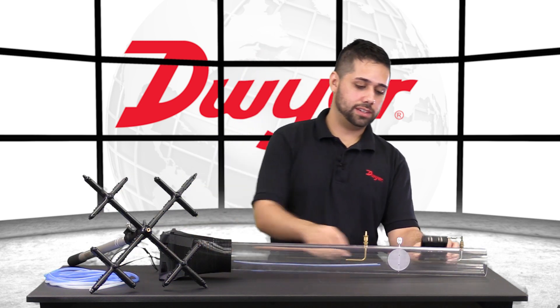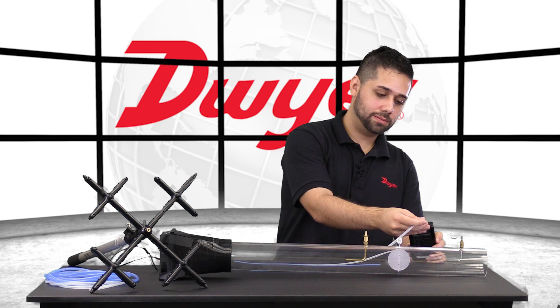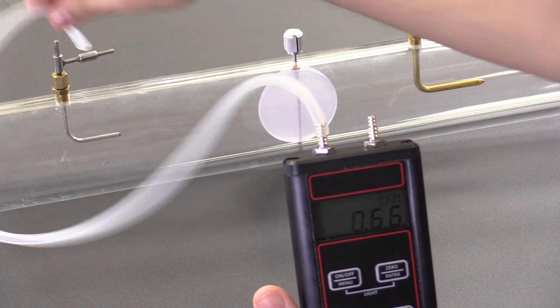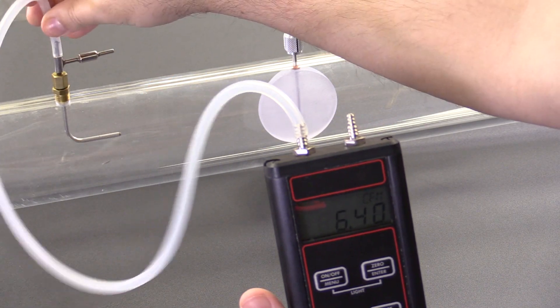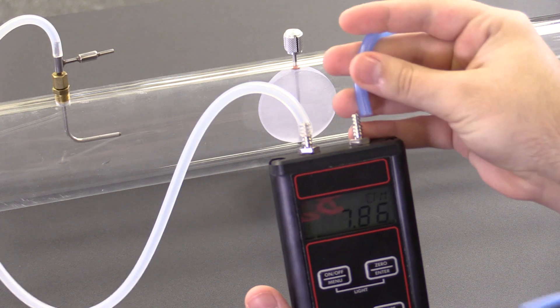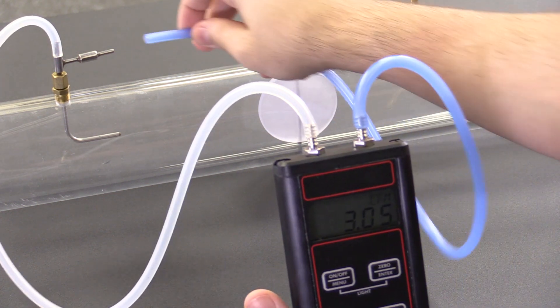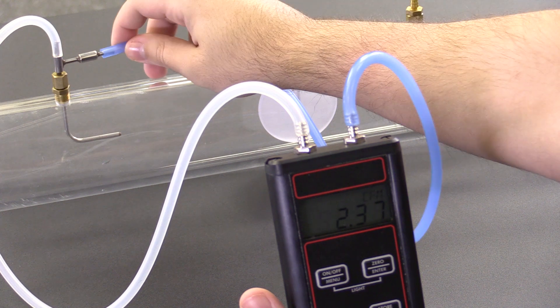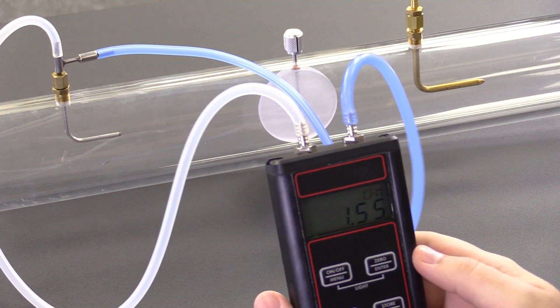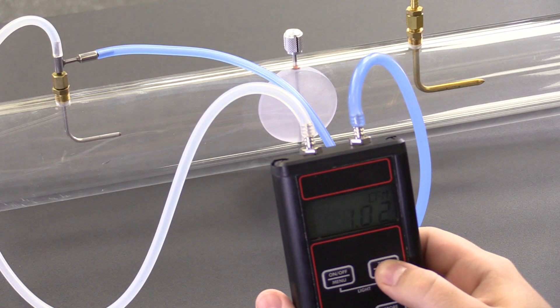Now let's connect our 477AV to the 167. We'll want to ensure that the high port goes to the total port. Once they're connected to the system with the airstream off, we'll want to zero the unit.